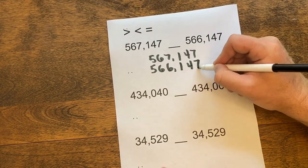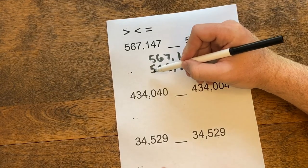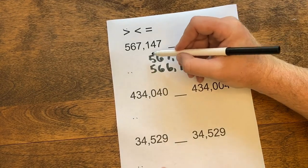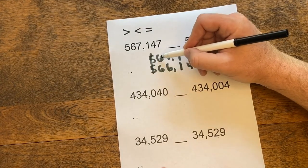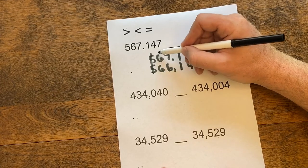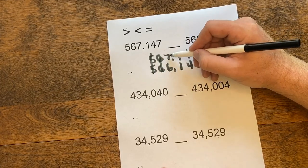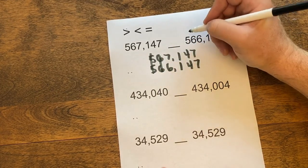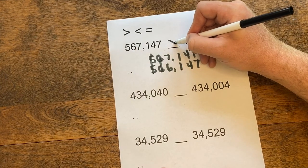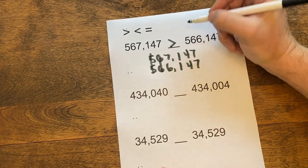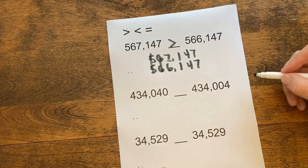Once we copy the numbers, we start comparing from the far left. The 5's are the same, so I keep going. The 6's are the same, I keep going. And here, the 7 is larger than the 6, so I put my greater than sign. 7 is bigger than the 6.